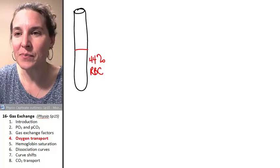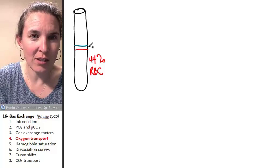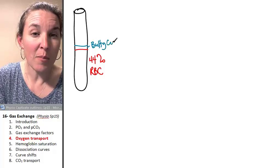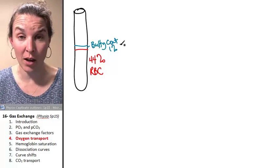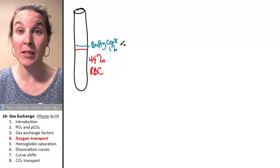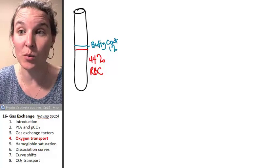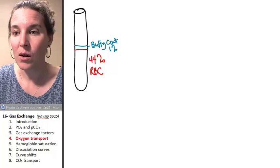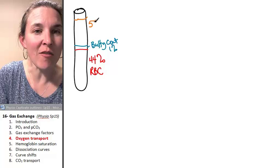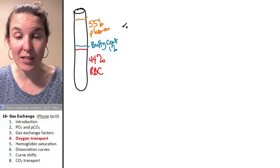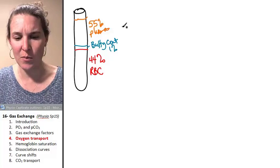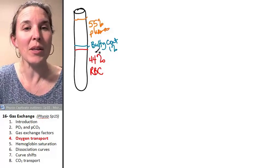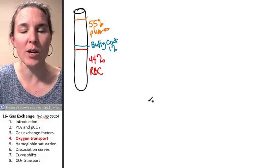About 1% of it is this stuff called the buffy coat. The buffy coat includes platelets. We're going to talk about them when we talk about how blood clotting takes place, and white blood cells, which are our immune warriors. So we're going to talk about those guys when we deal with the immune system. And the remaining 55% is plasma. Plasma contains proteins, as we know, because that's where the osmotic pressure in the blood comes from. It also contains various immune substances and some ions and some other stuff. But that's basically the fluid that the oxygen is transported in.